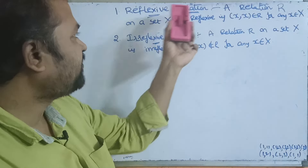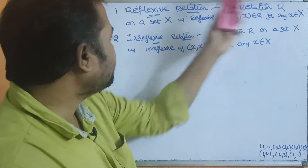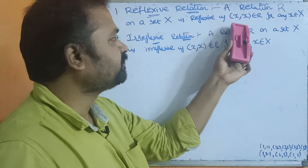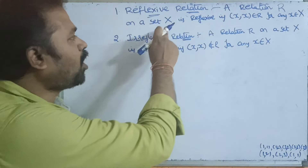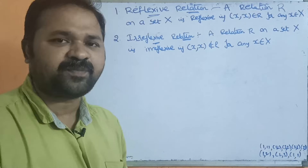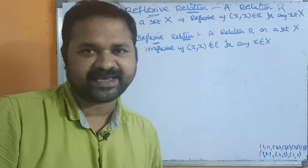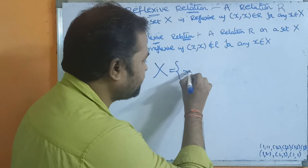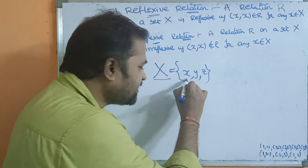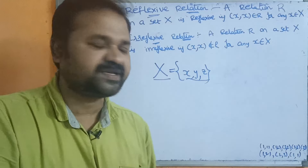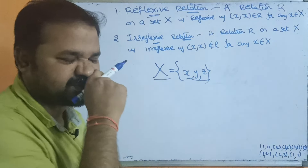Let us discuss reflexive relation and irreflexive relation. A relation R on a set X is reflexive if (x, x) belongs to R for any x belonging to X. Here R is the relation on set X. Sets are always represented with uppercase letters, whereas the members or elements of the set are represented using lowercase letters.